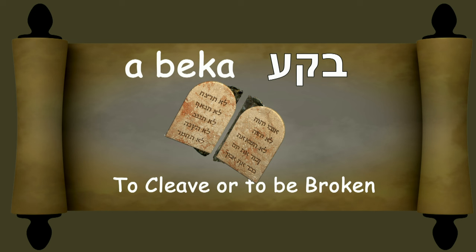In Exodus 32:19, as soon as Moses came near the camp, he saw the calf and the dancing, and Moses' anger waxed hot and he cast the tables out of his hands and broke them. Psalm 119:72 says, 'The Torah from your mouth, God, is better to me than thousands of gold and silver.' Who's really rich? Those who have a relationship with God, or those who have a ton of money?